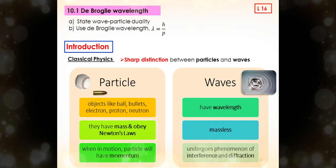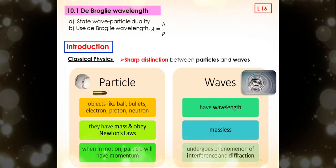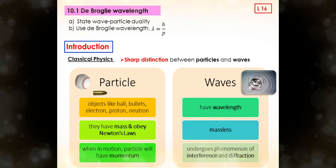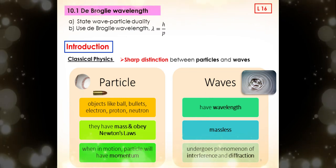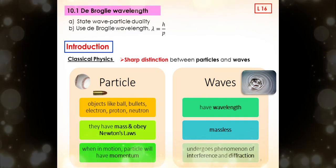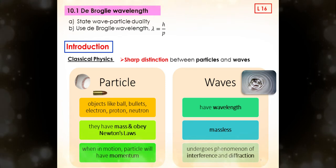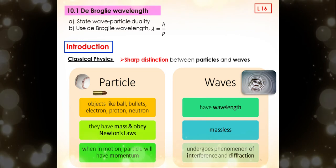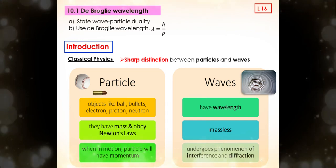Now we are going to focus on the first subtopic. Here, you will be introduced to particles and waves. In classical physics, long time ago, there was sharp distinction between particles and waves. We can say a particle is an object like a ball, bullet, electron, proton, and neutron. A particle must have mass and must obey Newton's laws. The particle in motion will have momentum. As for waves, the waves have wavelength. They are massless, which means they have no mass, and undergo phenomenon of interference and diffraction.